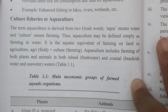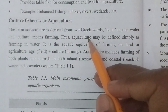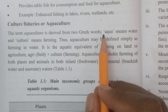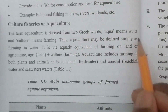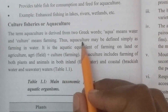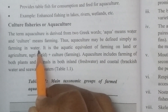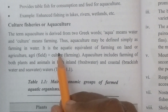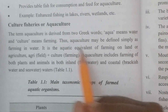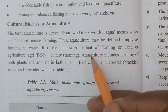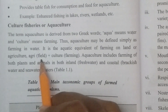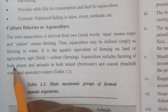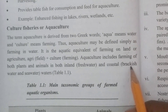Next, culture fisheries and aquaculture. The term aquaculture is derived from two words: 'aqua' meaning water and 'culture' meaning farming. So if we are farming in water, we call it aquaculture. It is the aquatic equivalent of farming on land, or agriculture.